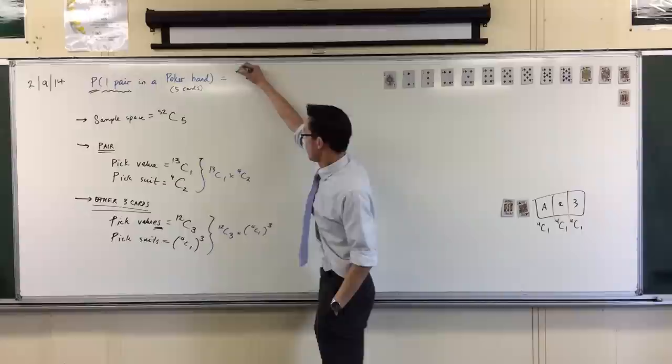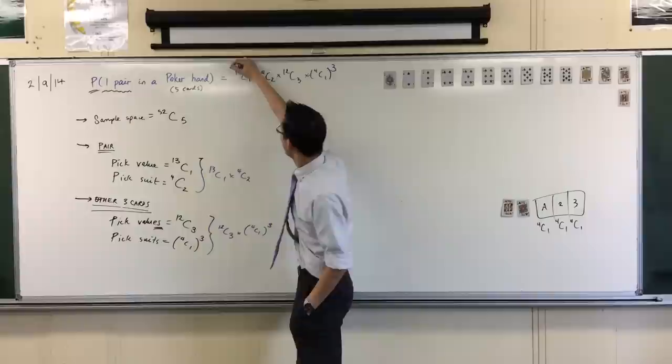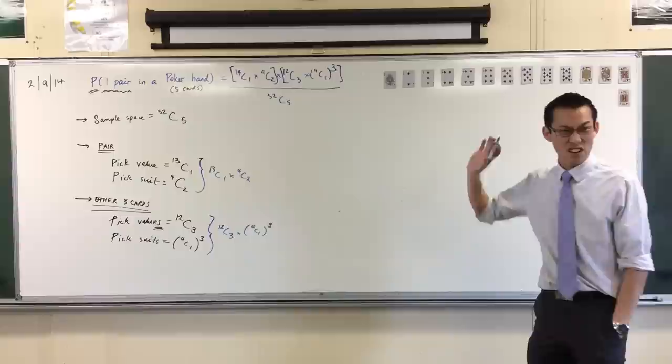Thirteen choose one, four choose two, twelve choose three, four choose one cubed. Even though it's a string of four, you can see it comes from two different places. There's your pair and there is your other three cards. And then you divide by your sample space that you worked out first thing.